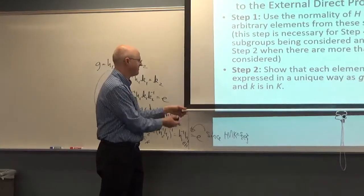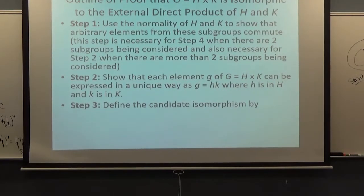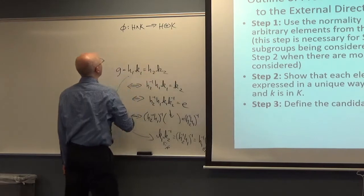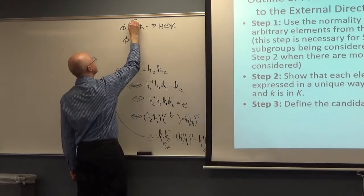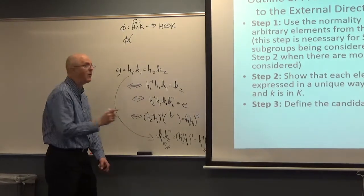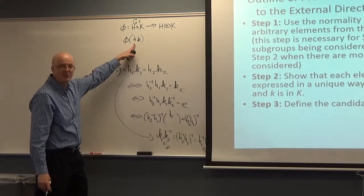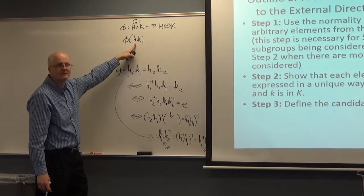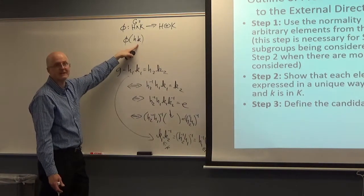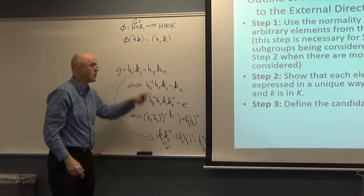Step three: define the candidate isomorphism. Since every element of G can be written uniquely as some h times some k, we can write the formula for φ where the input is represented as h·k, and the most natural thing to map it to is the ordered pair (h, k). That's what we do.